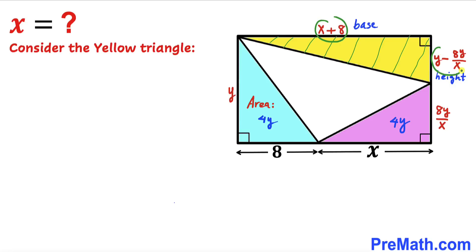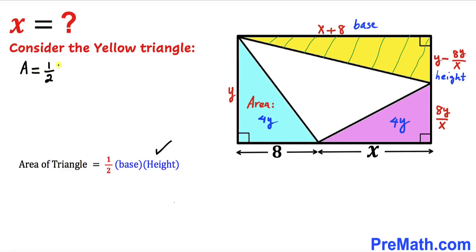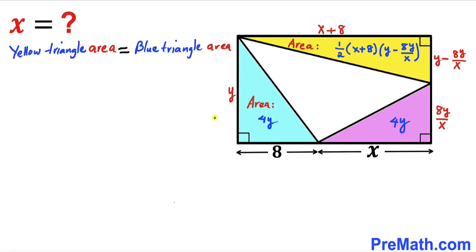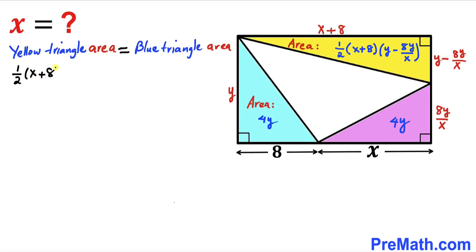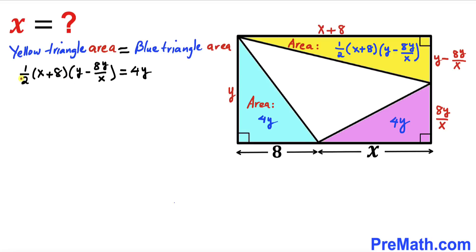Now let's focus on this yellow triangle, whose base is x + 8 and whose height is y minus 8y/x. Recalling the area of a triangle formula once again, the area of this yellow triangle is going to be (1/2) × (x + 8) × (y − 8y/x). We know that the area of this yellow triangle equals the area of this blue triangle, so let's equate them: (1/2)(x + 8)(y − 8y/x) = 4y.